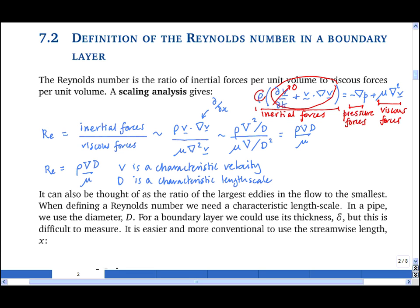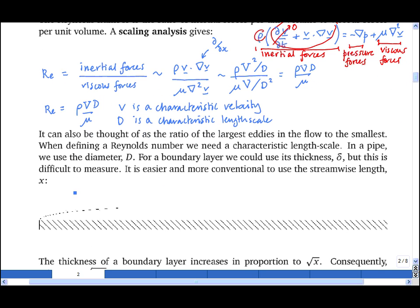So for a flow in a pipe it's natural to choose d as the diameter and v as the average velocity. In a boundary layer we have an obvious characteristic velocity, it is the free stream velocity. Another obvious length scale is the thickness of the boundary layer delta, but this is very hard to measure. It's much easier, and as it turns out just as good, to measure the distance from the leading edge, x,